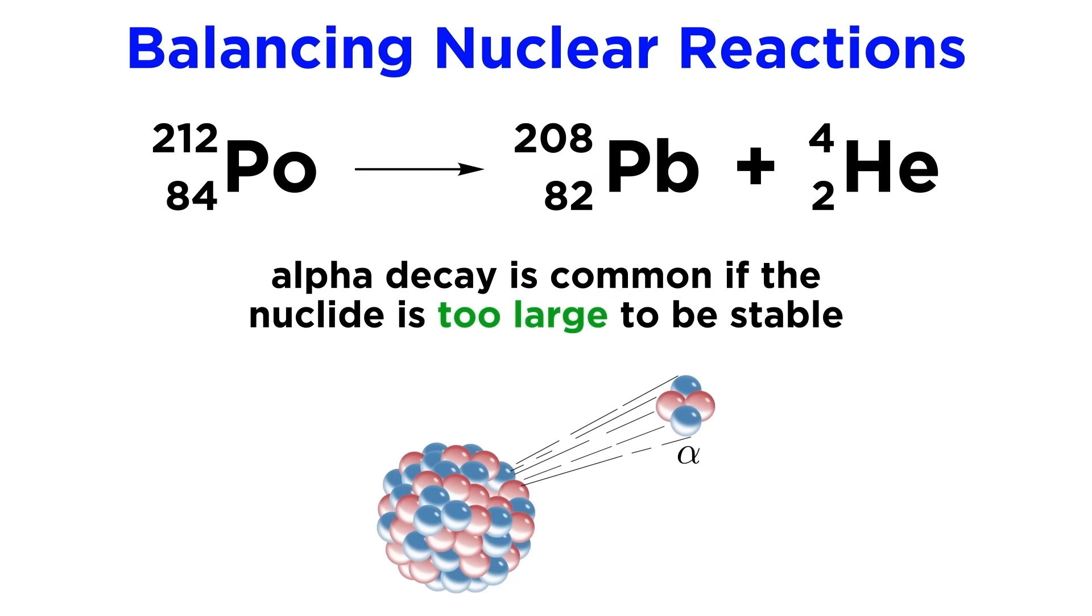This type of reaction will typically happen if the nuclide does not fit into the band of stability, often because the nucleus is simply too large to be stable, and the strong nuclear force dissipates more rapidly than the electromagnetic force, such that proton-proton repulsion starts to outweigh the force holding the nucleons together.